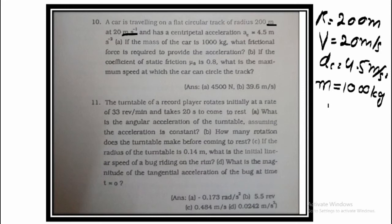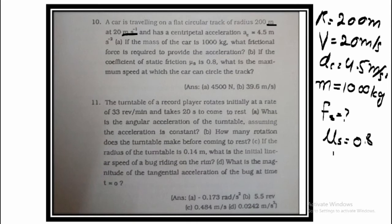We have to calculate two things. Part A: How much frictional force is required to provide the centripetal acceleration? Part B: The coefficient of static friction is given as 0.8 — what is the maximum speed at which the car can circle the track? So we have to calculate the force of friction and the maximum speed for the car.